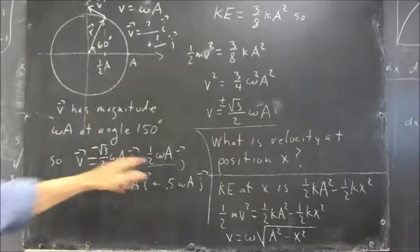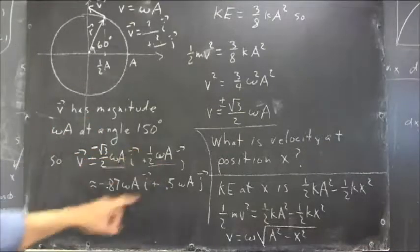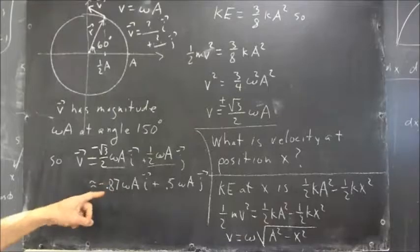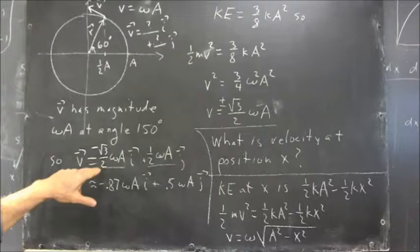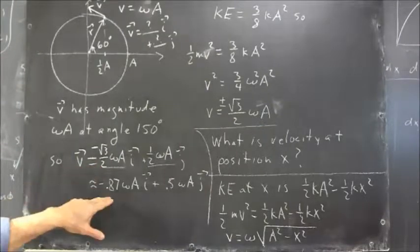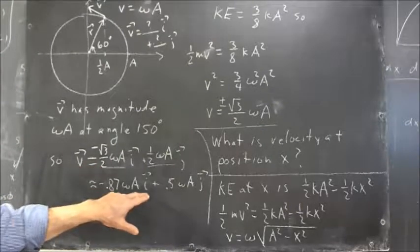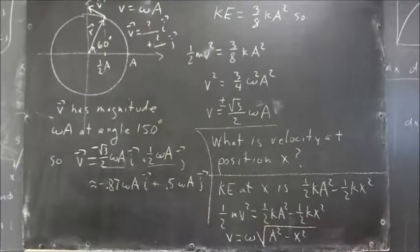That's high school trigonometry, and I think everybody pretty much knows that. I think we saw that people were pretty good with that. Anyhow, these approximations then, V is about negative 0.87 omega A times I, plus 0.5 omega A times J.